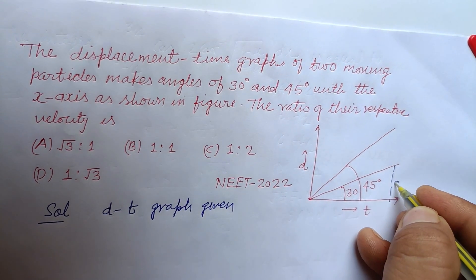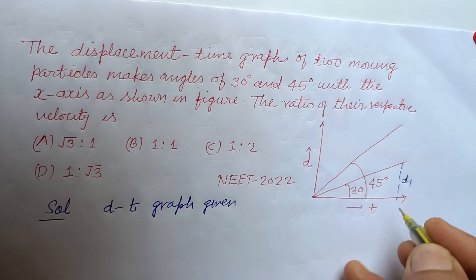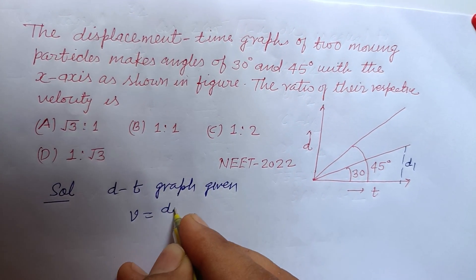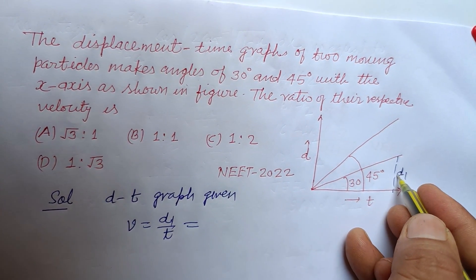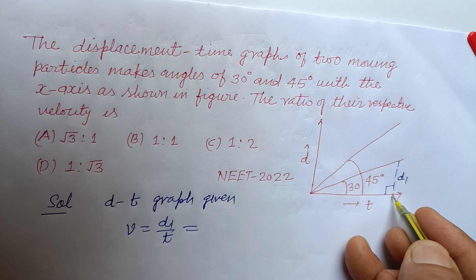So let it is d1 and this time is t1. So velocity is displacement upon time.